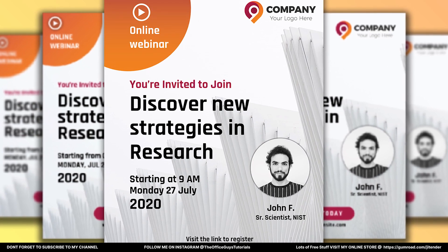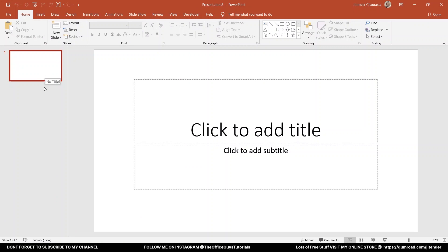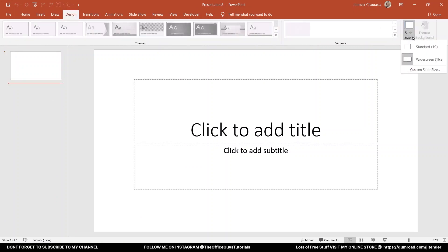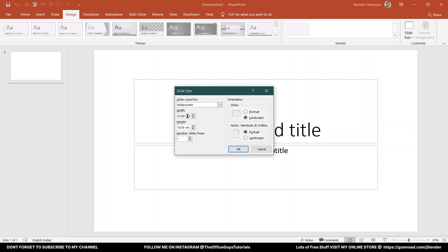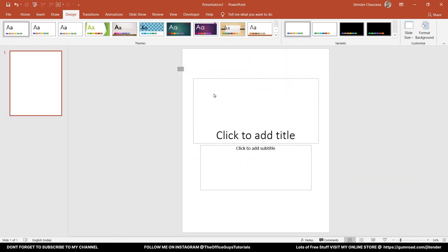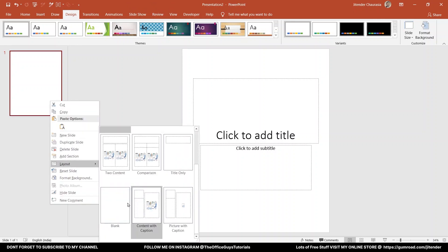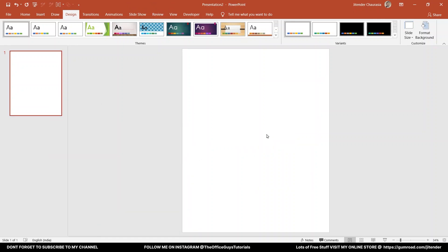I'm creating this design to be posted on Instagram, so I'll take the dimension of the slides accordingly. Let me take a new document. I'll go to the Design tab, Slide Size, Custom Slide Size, and give it a width of 40 and height of 50 — that's a 4:5 ratio, a perfect size for Instagram. I'll click OK and maximize. Then right-click, Layout, and choose a blank layout.